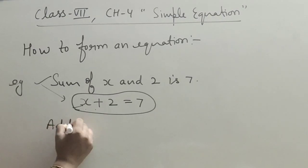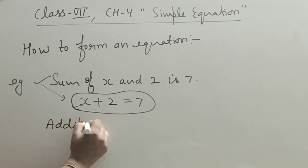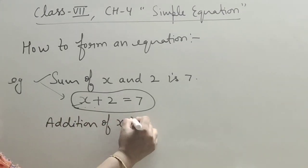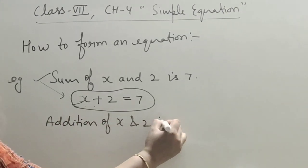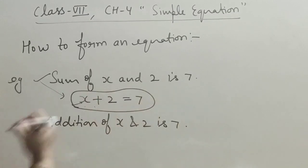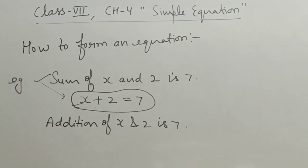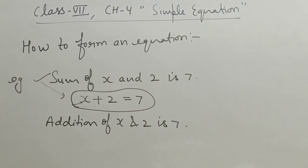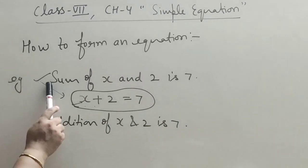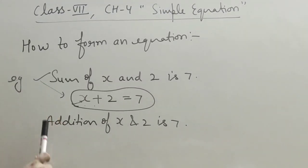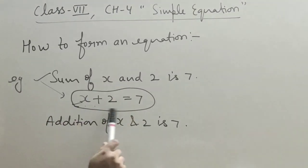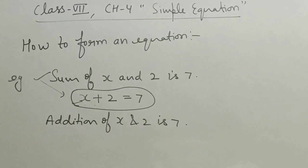Addition of x and 2 is 7. So don't be confused — if the statement is written differently but means the same thing, the resulting equation will remain the same.